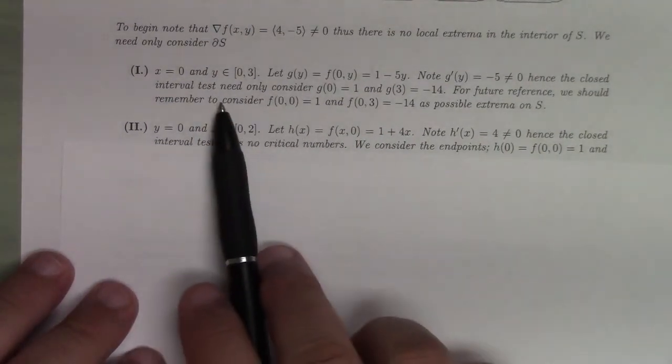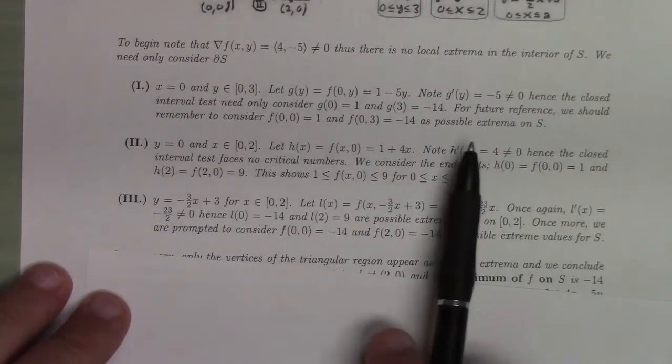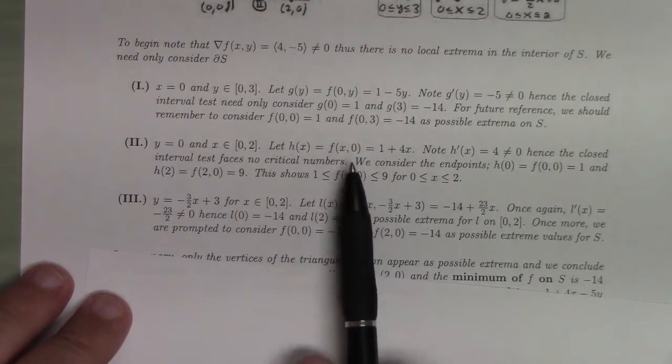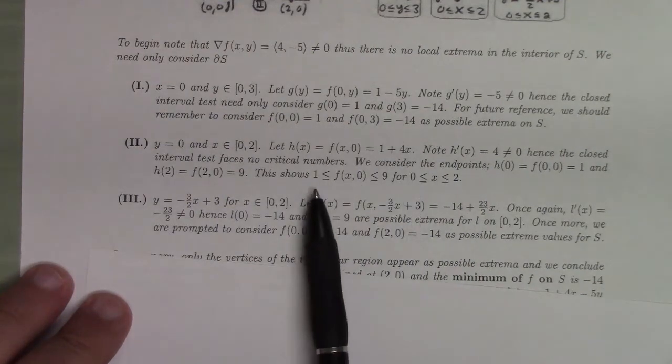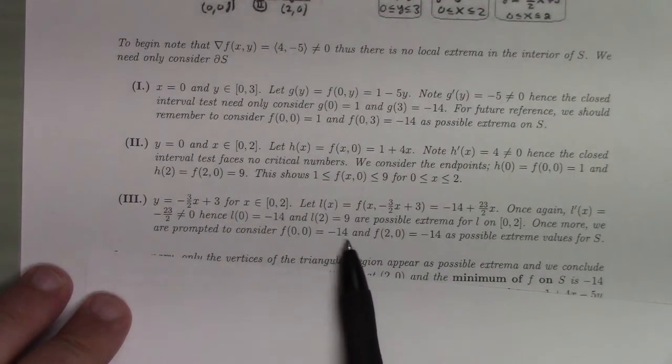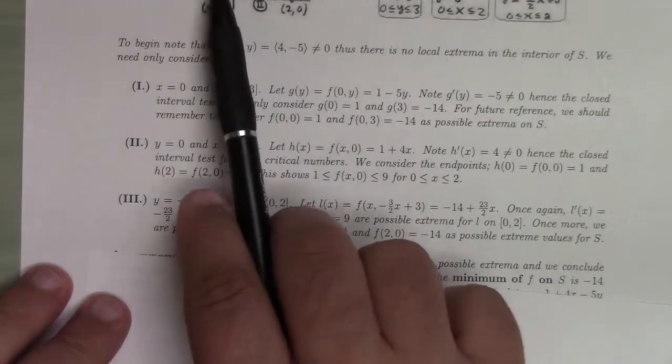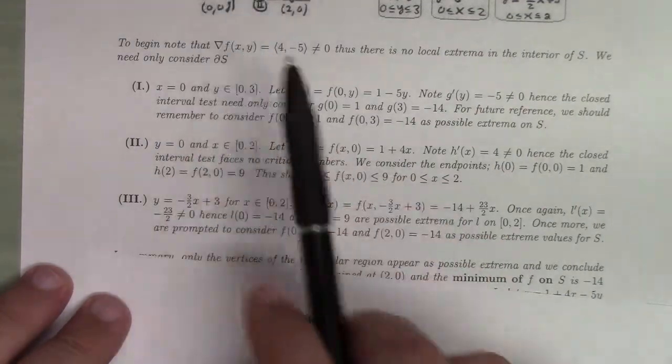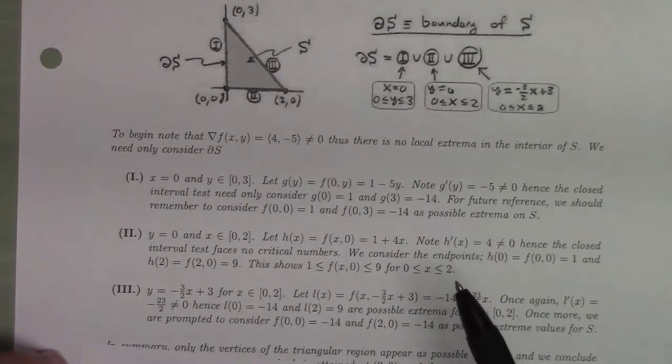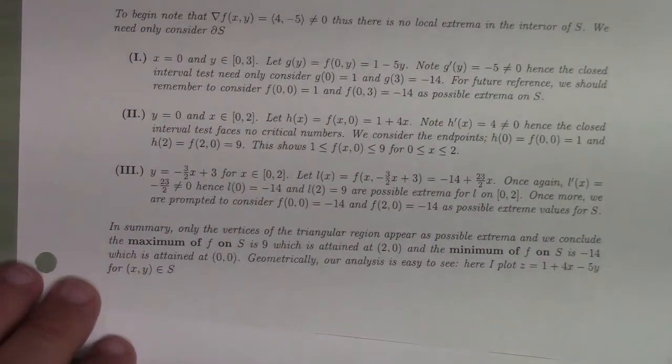That's what I'm going through here. This is leg 1, leg 2, leg 3, and when I do that, I end up figuring out that there are no critical points in the middle. We only need to check the endpoints, and we get 1, minus 14, and 9. There's overlap because legs 1, 2, and 3 share common vertices. The outputs at the vertices were 1, minus 14, and 9, so minus 14 is the minimum and 9 is the maximum.